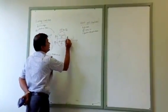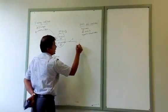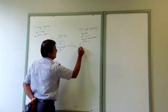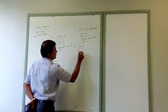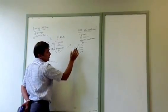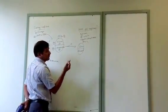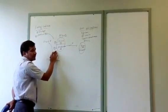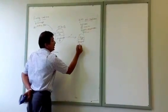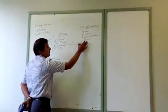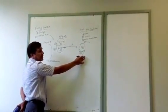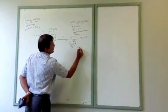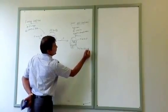When phosphate is removed from PFK2, the kinase part becomes active because it is now in the dephosphorylated state, while the phosphatase part becomes inactive. So in the presence of insulin in the well-fed condition, PFK2 kinase is active and phosphatase is inactive. The active PFK2 kinase converts fructose 6-phosphate into fructose 2,6-bisphosphate.